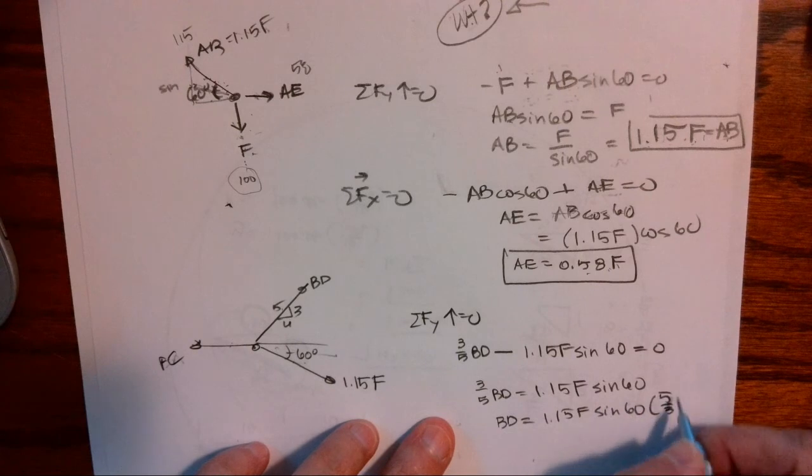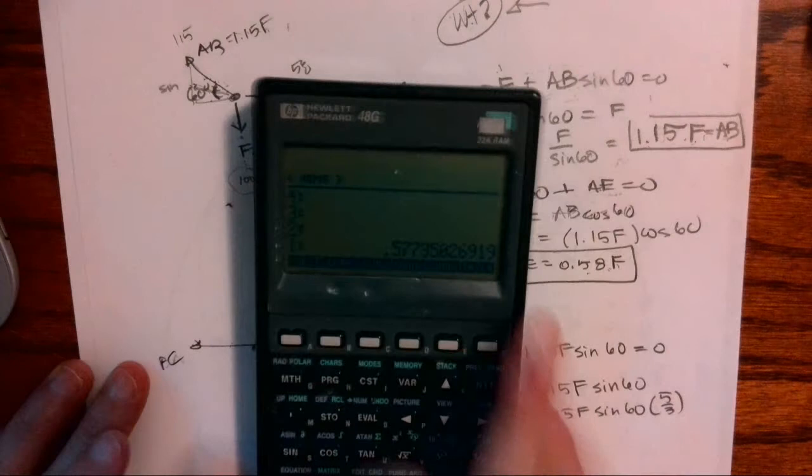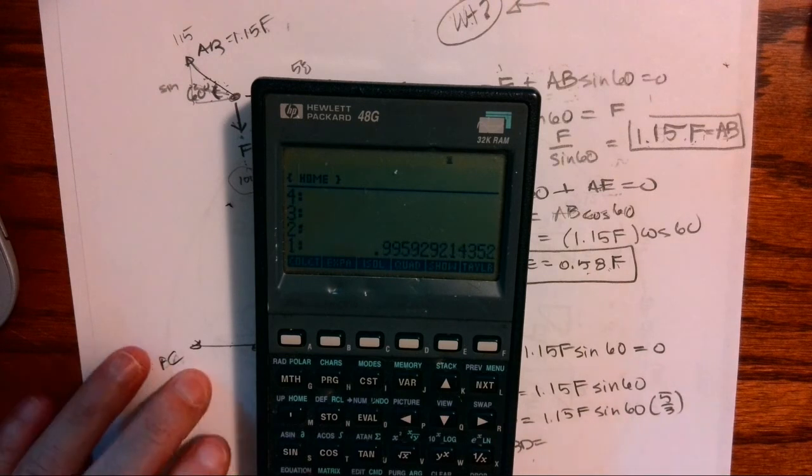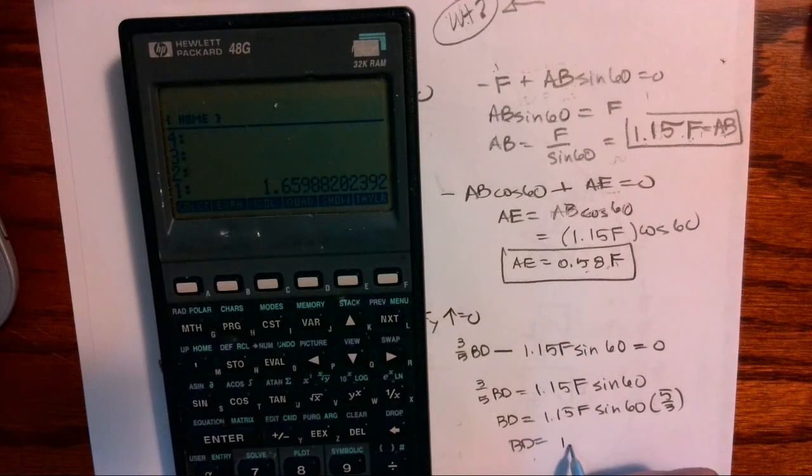Simplify, okay, so I have 1.15 times 60 sine times 5 divided by 3, and I get that BD is 1.66 times F.